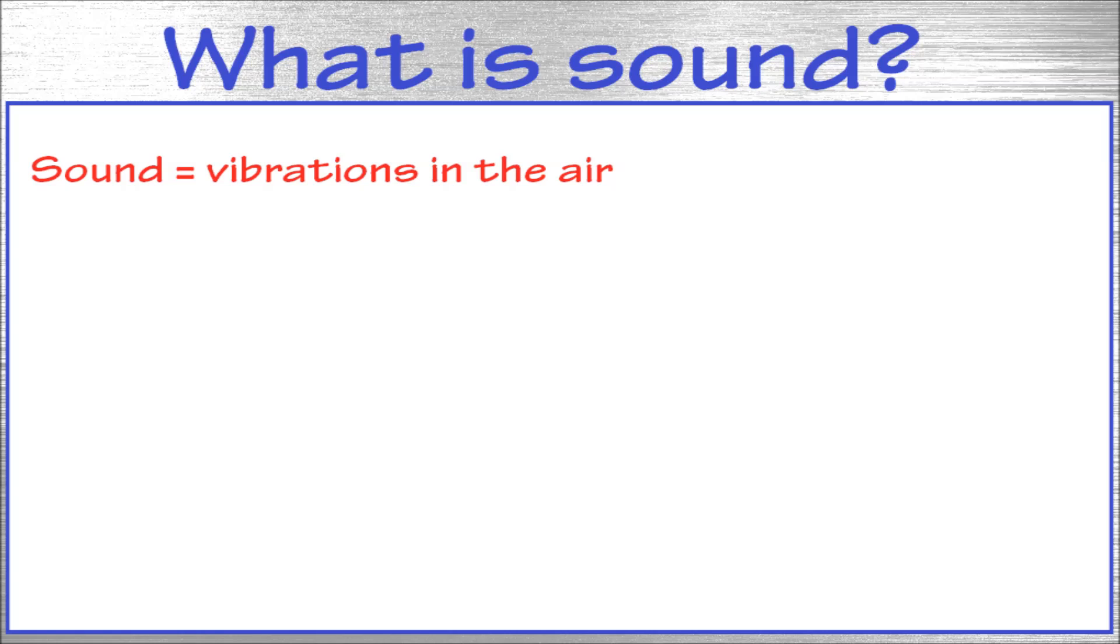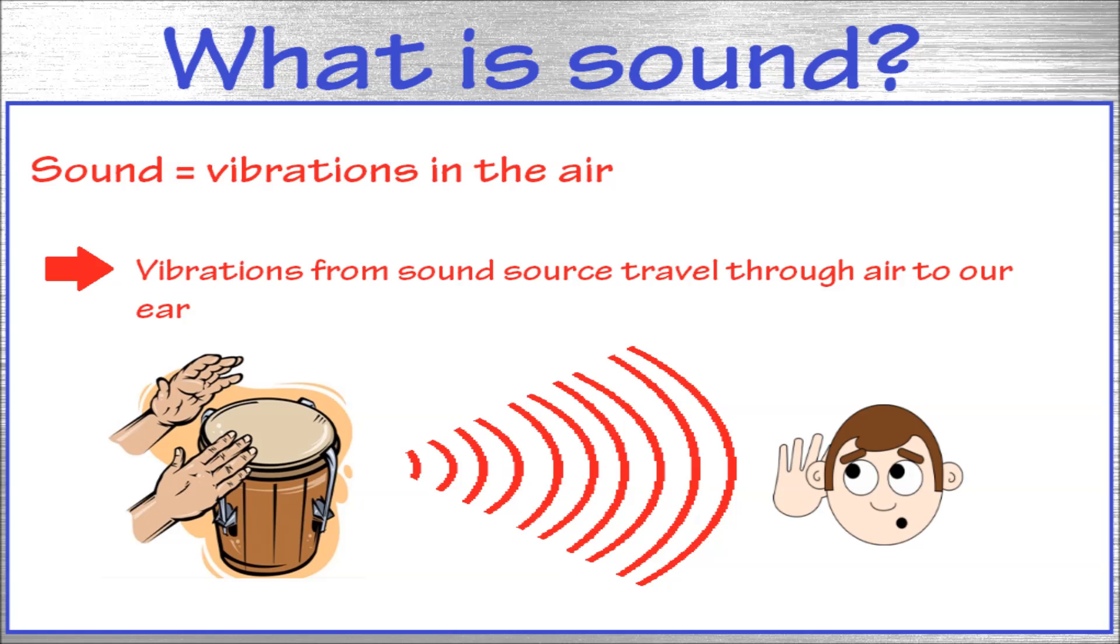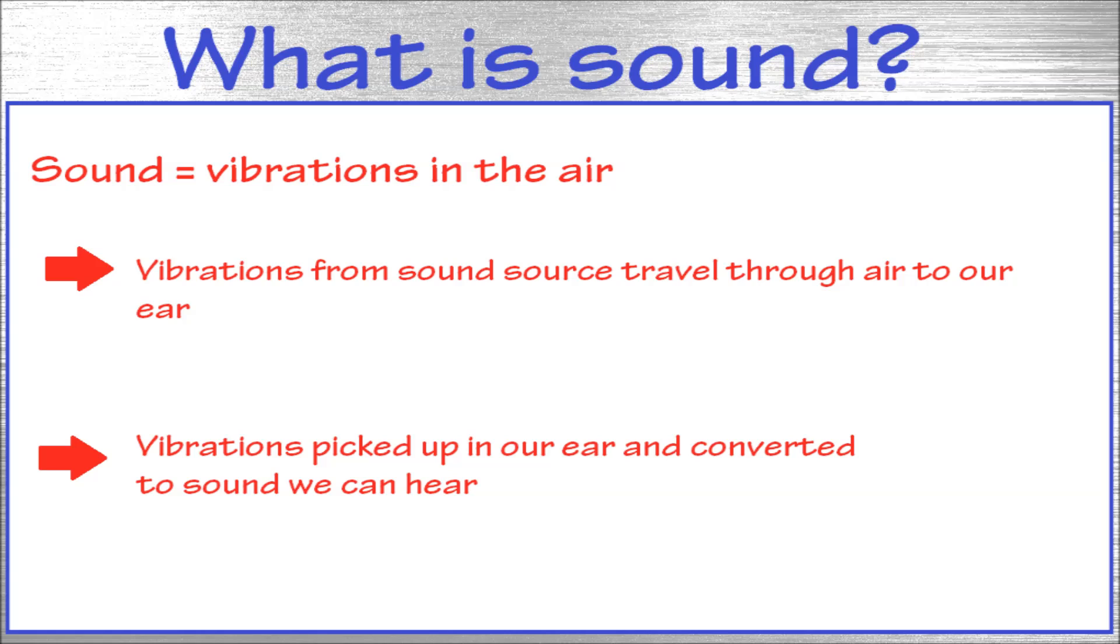When an object produces sound, it vibrates. These vibrations make the air around it vibrate as well, making the sound wave. This wave eventually reaches our inner ear where it's processed and converted in the brain, where we hear them as sounds.